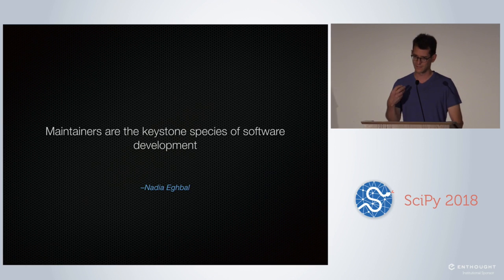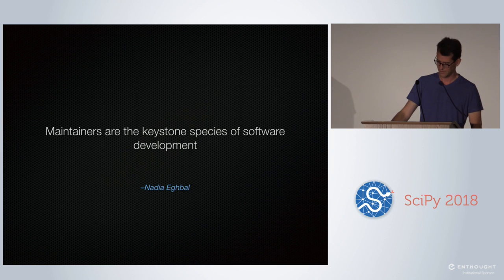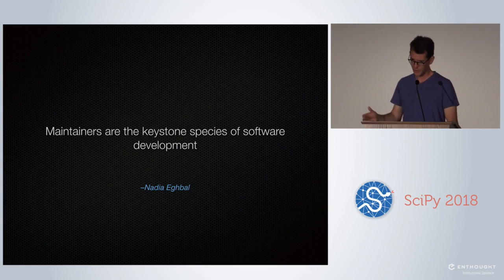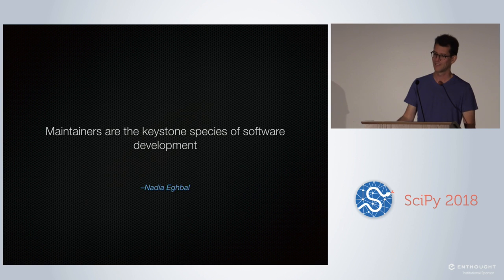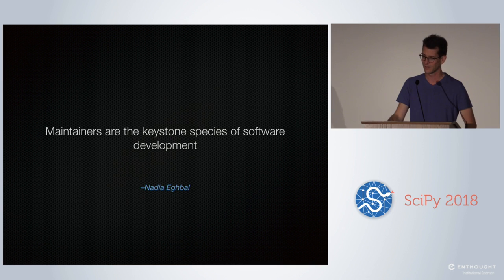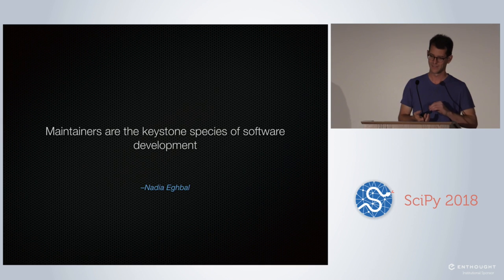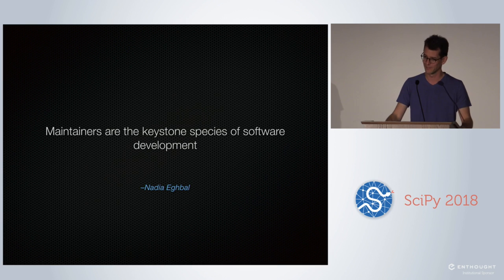Maintainers are actually the single most important element of your project. There's a woman named Nadia Eghbal who writes a lot about software sustainability. She said maintainers are the keystone species of software development. Keystone species are the species that make a whole ecosystem work. Code by itself goes stale very quickly — every time a new library comes out or a new Python version, you have to do a lot of stuff. Without maintainers, it won't work for very long.